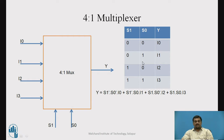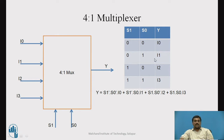This is the function table which represents the operation. For the input combination 00 at the select input, Y is equal to I0. That means whenever you provide S1 equal to 0 and S0 equal to 0, Y will be connected to I0 and whatever is available at I0 will be available at Y, which is our output. Similarly, for 01 you get Y equal to I1, for 10 Y is equal to I2, and so on.